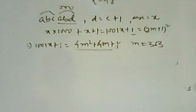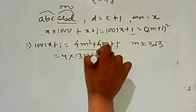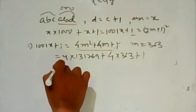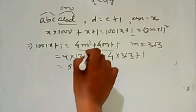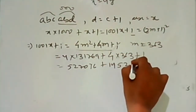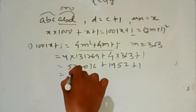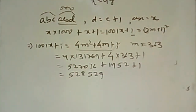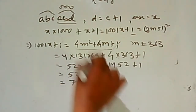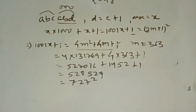Substituting m = 363: 4m² + 4m + 1 = 4×131769 + 4×363 + 1 = 527076 + 1452 + 1 = 528529. The six-digit number is 528,529, which is the square of 727. Note that 529 = 528 + 1, confirming the condition. You can also assume an even number and find other answers.